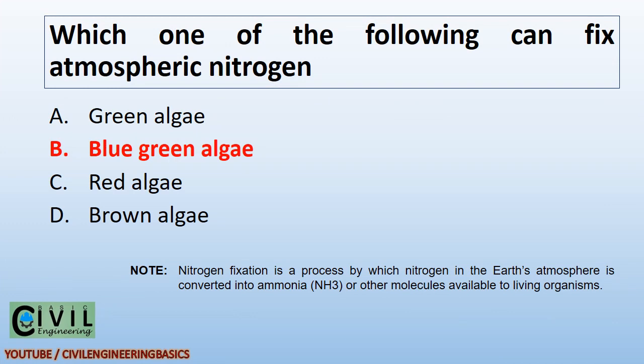Which one of the following can fix atmospheric nitrogen? Blue-green algae. Note: nitrogen fixation is a process by which nitrogen in the Earth's atmosphere is converted into ammonia (NH3) or other molecules available to living organisms.